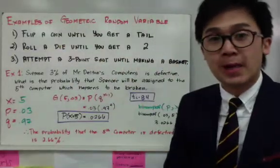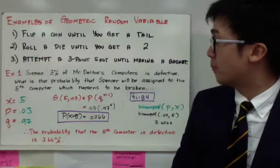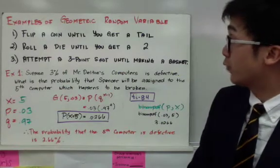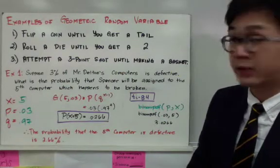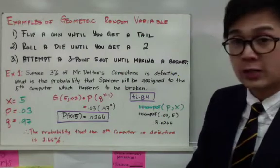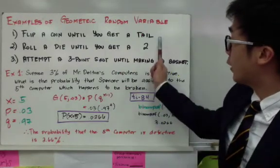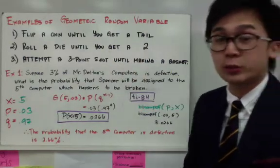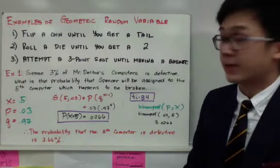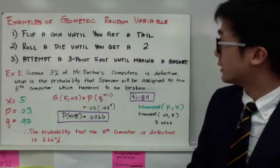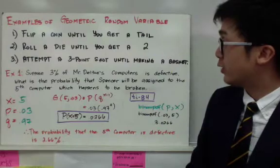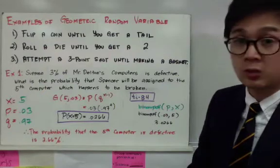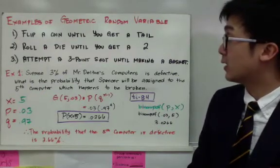These are example experiments where geometric probability will be true. The first example, flipping a coin until you get a tail. To answer this question, we'll use geometric random variable, geometric distribution technique. Number 2, rolling a die until you get a 2, and the third will be attempting a 3-point shot until making a basket. You'll notice in examples 1, 2, and 3, there's no fixed number of trials.